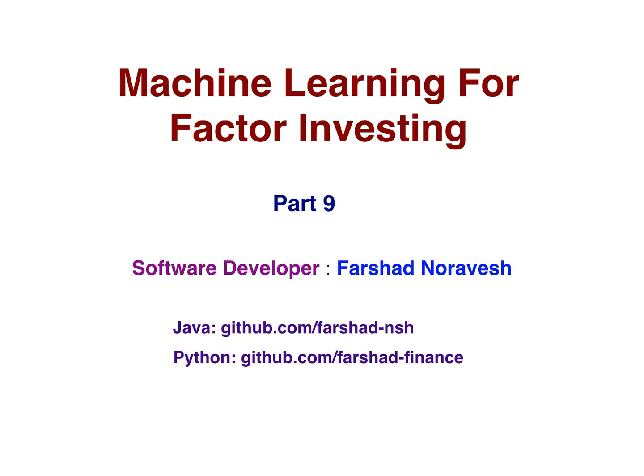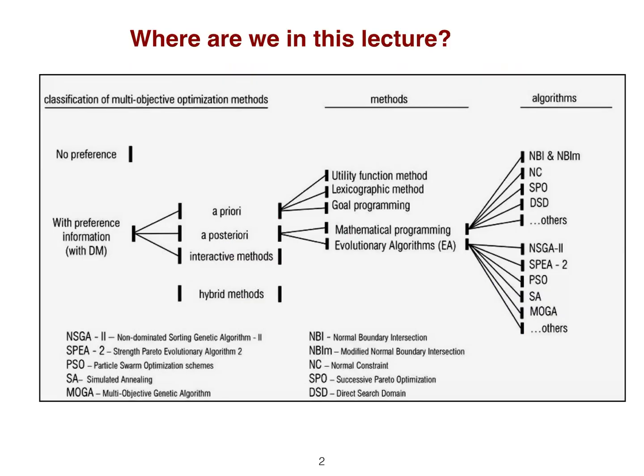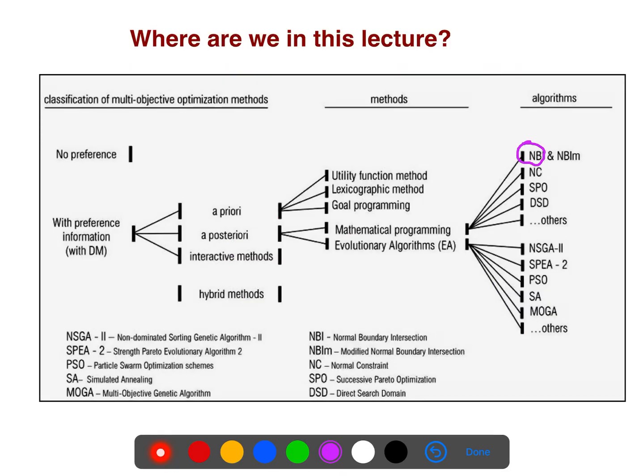In this video, I will talk about normal boundary intersection, and we are here - normal boundary intersection. It is a kind of mathematical programming, and it's a posteriori. Posteriori methods are those methods which we don't have any preferences at first, and that's why it is much better than goal programming or utility method or any other method which are a priori.